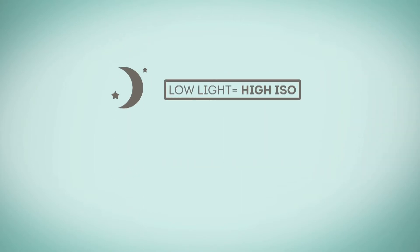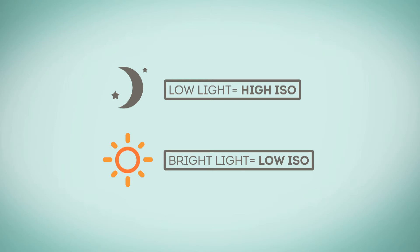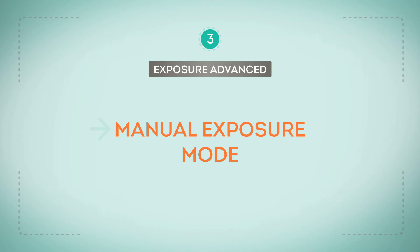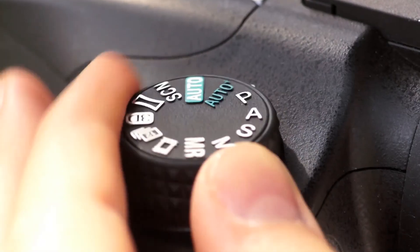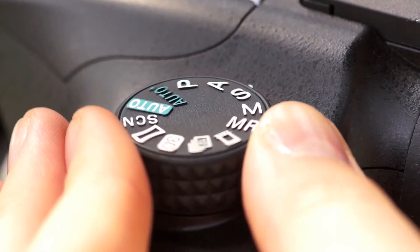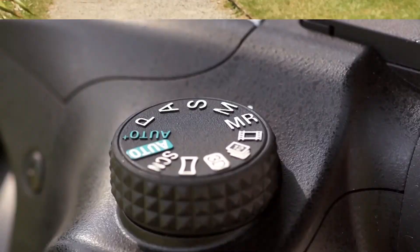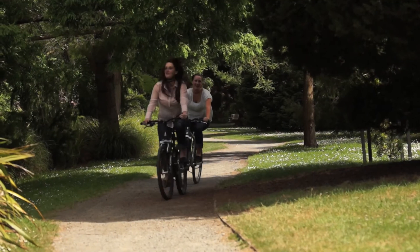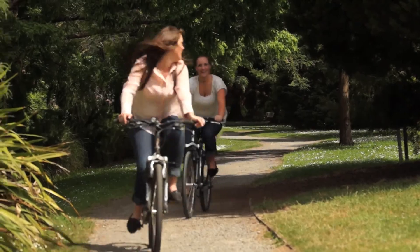In low light, we need more sensitivity, so a high ISO setting. And in bright light, we need less sensitivity, so a lower ISO setting. So what's manual exposure? As the name suggests, this is where you are in full control to decide the shutter, aperture, and ISO settings.